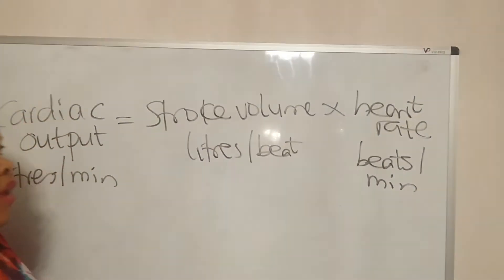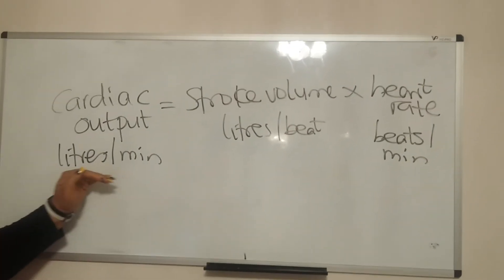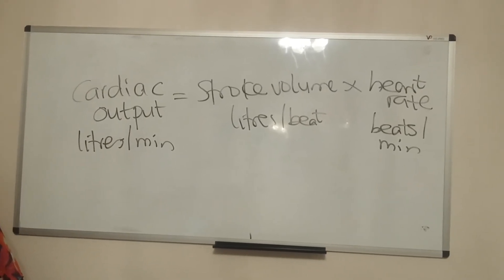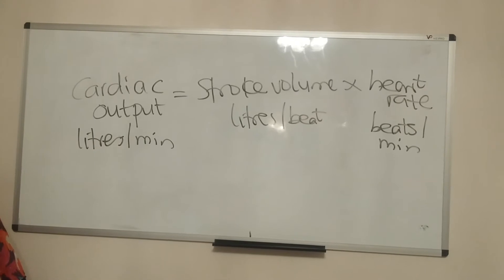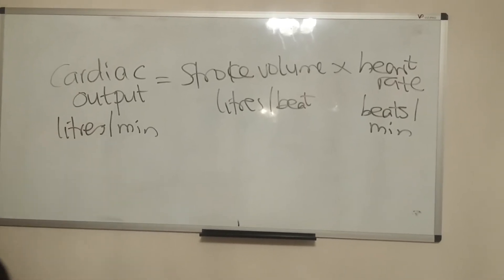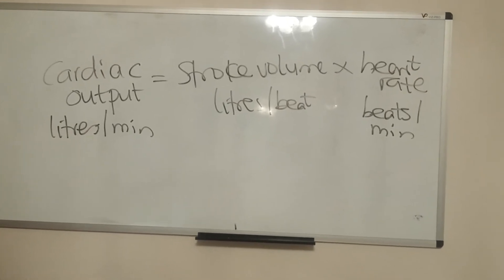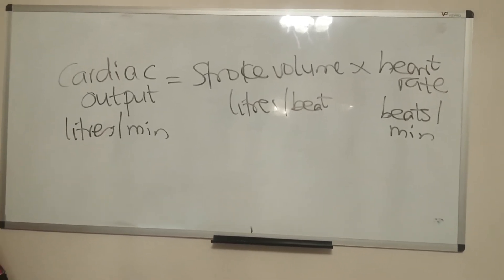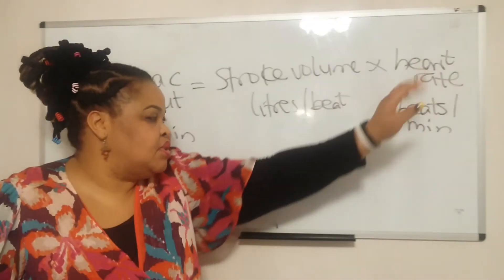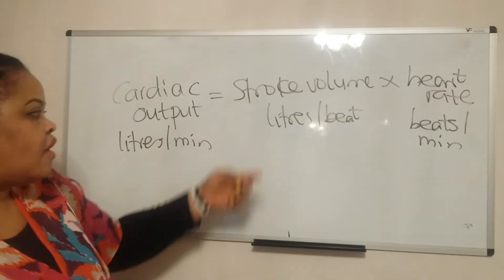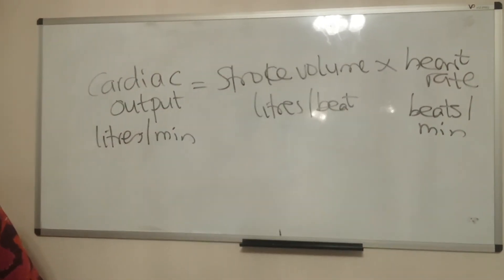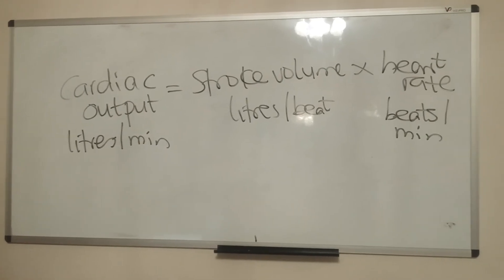The cardiac output is the volume of blood pushed into the aorta each minute. The stroke volume is the volume of blood pushed into the aorta in each beat. The heart rate is the number of times the heart beats per minute. So: cardiac output (L/min) = stroke volume (L/beat) × heart rate (beats/min).